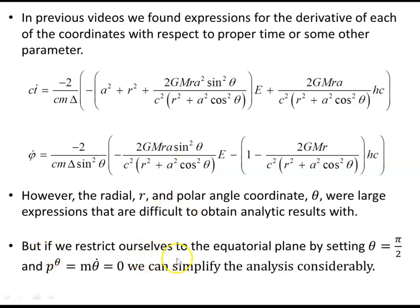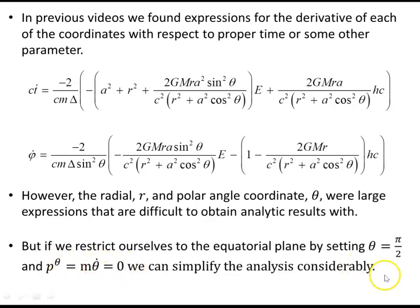If we restrict ourselves to the equatorial plane by setting theta equals pi/2, and set the polar angle component of momentum to zero — so M theta dot equals zero — they simplify, as theta dot will be zero throughout this analysis. The particle will simply remain at theta = pi/2, which is the equatorial plane. The geometry is symmetric about the equatorial plane, so the bottom half is a reflection of the top half.